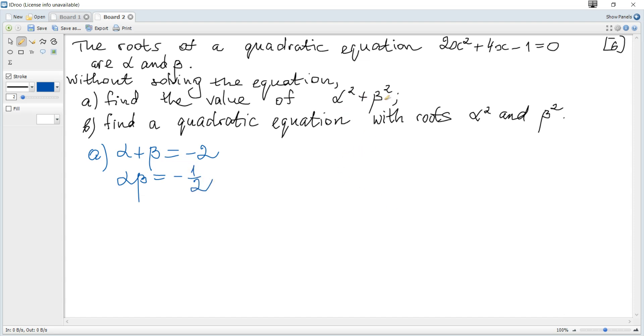We need α² + β². To get it, we can square the left-hand side and right-hand side of the sum equation. Hence, it becomes α² + 2αβ + β² = 4. Substituting -1/2 for αβ, we get α² + β² = 4 - 2(-1/2) = 5.